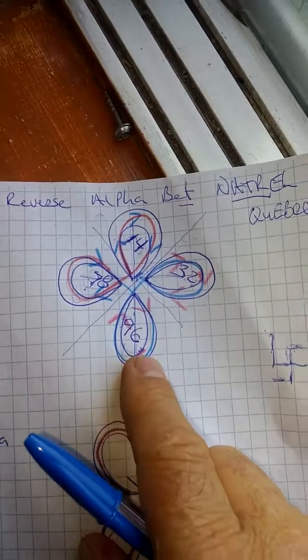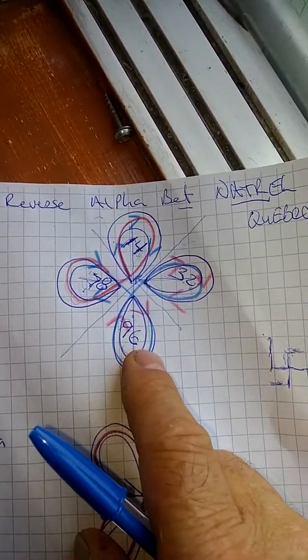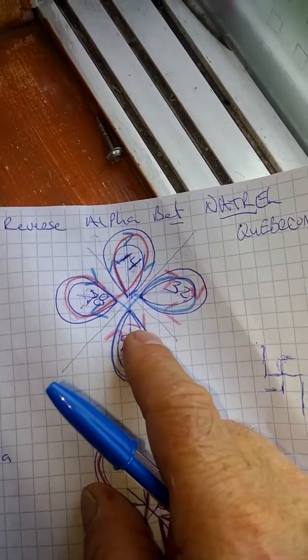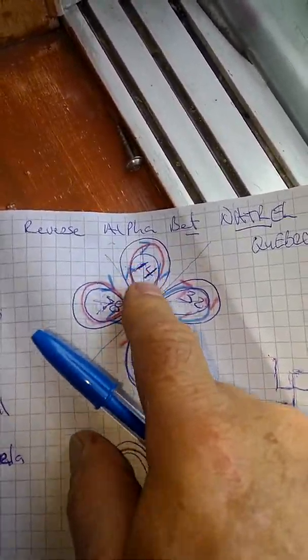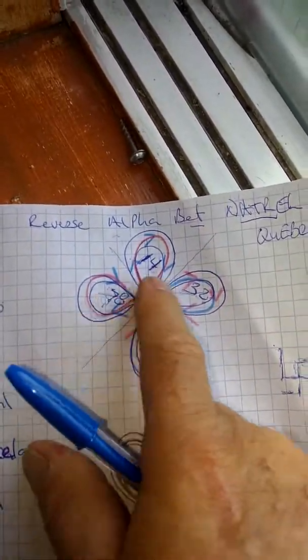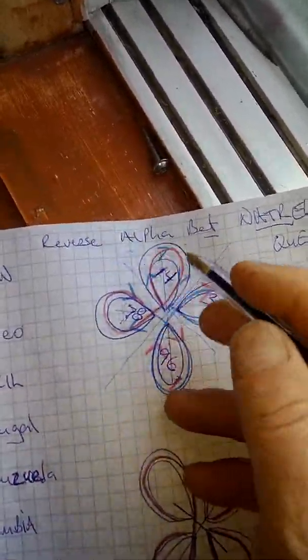This number is seven and eight, 15 equals six. This is nine and six, 15 equals six. So when we come into this position, we have number five, right? It doesn't matter if it's this way or that way. It's five this way.